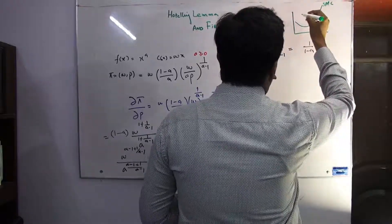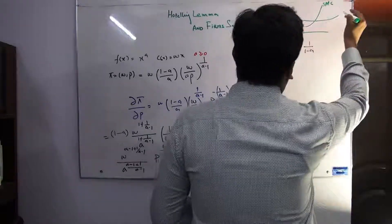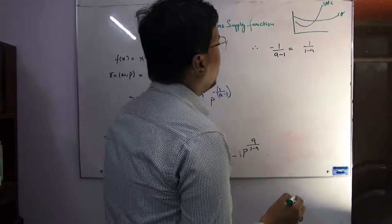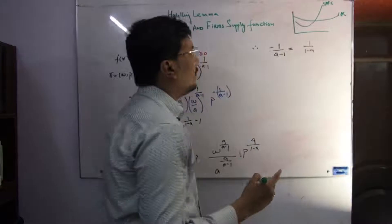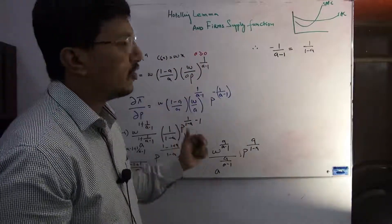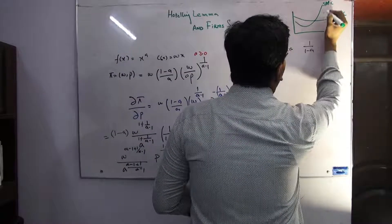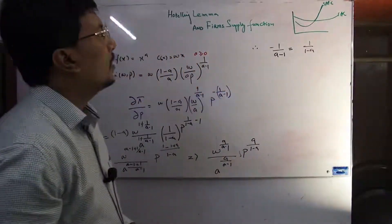The firm supply function is basically the short-term marginal cost curve that passes from the bottom of the average cost. The short-term marginal cost curve crosses from the bottom of the short-term average cost curve, and the positive area with positive slope is called the supply function.